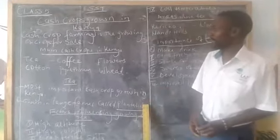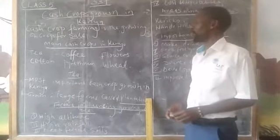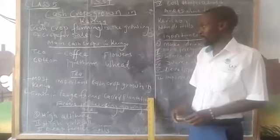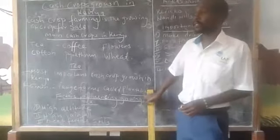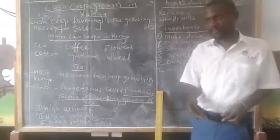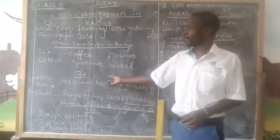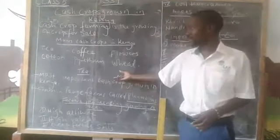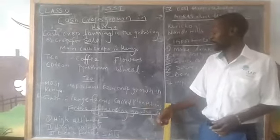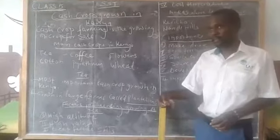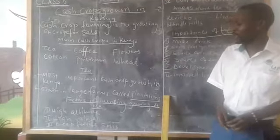So today we will only focus on tea, which is the most important cash crop grown in Kenya. It is grown in large farms called plantations, but there is also small-scale farming. This tea is grown, then massed and taken to the factories, processed, and then sold locally and also abroad — that is, it is exported to foreign countries.